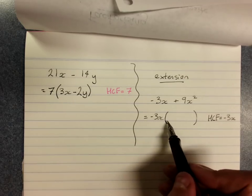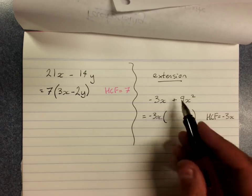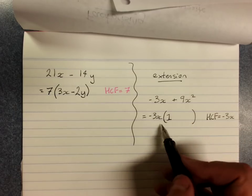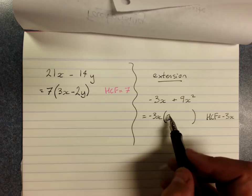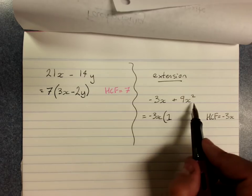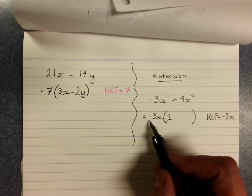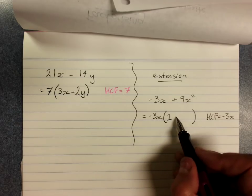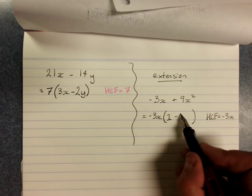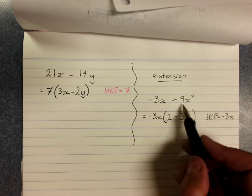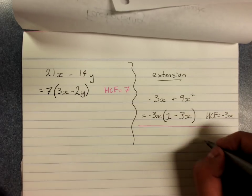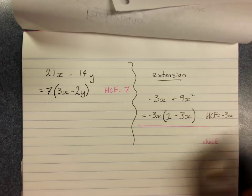So when we factorize, we put negative 3x out the front. Now negative 3x times what gives me negative 3x? That will be 1. So if your whole term is the factor, you're going to have a 1 in your brackets. Here's where you do have to be careful. Negative 3x times what gives you positive 9x squared? It will have to be negative 3x. So please remember, once you've factorized, do your check. Label it check if you're doing it in a test.